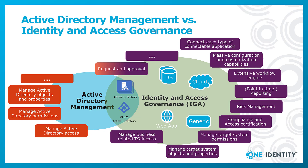If you are standing in front of that decision to figure out whether Active Directory management or an identity and access governance solution is what you need, the question can be easily answered. If you have to manage mainly an Active Directory or an Azure Active Directory and you are typically interested in joiner, mover, leaver processes, the Active Directory management solution is what you're looking for. If you are interested in connecting hundreds of different systems and applications, and if you are interested in rich compliance features for risk management or compliance, then it is necessary to look at an identity and access governance solution.